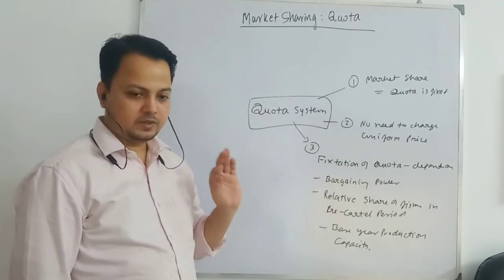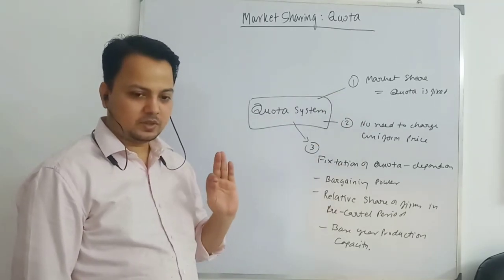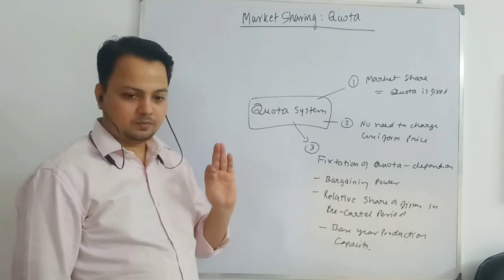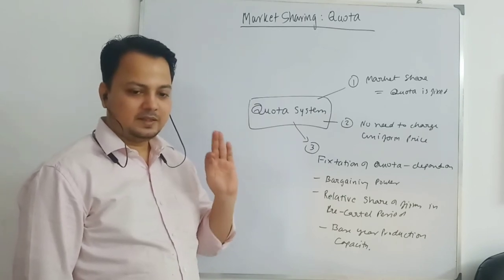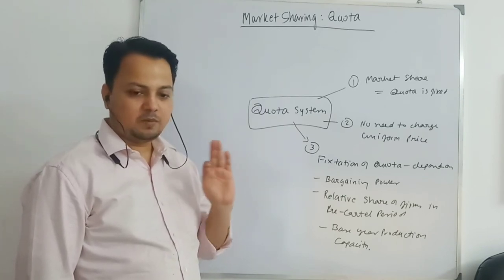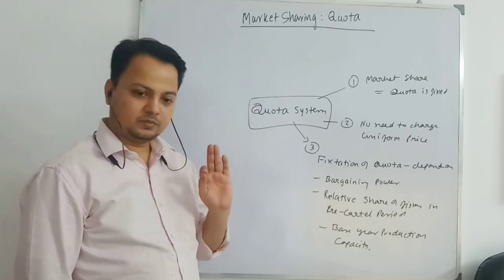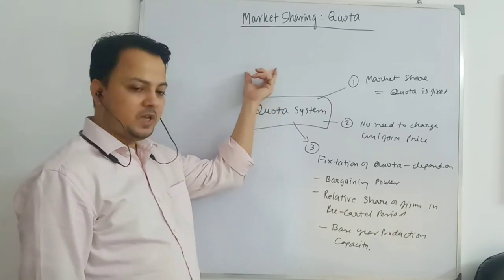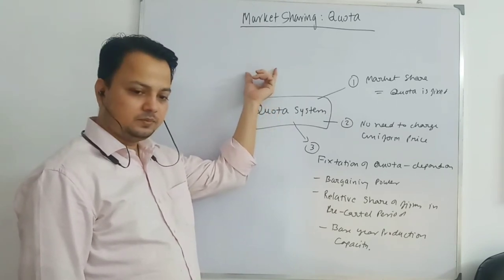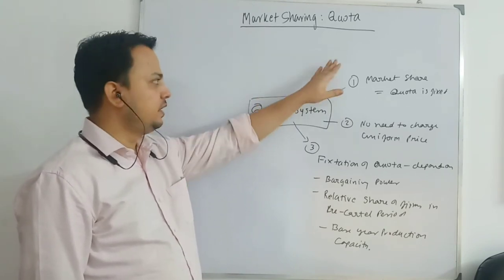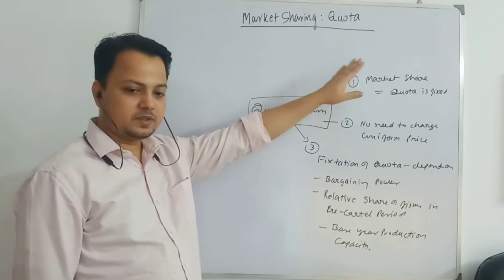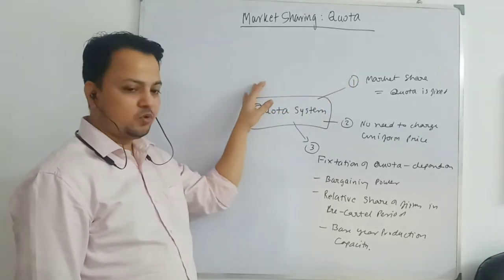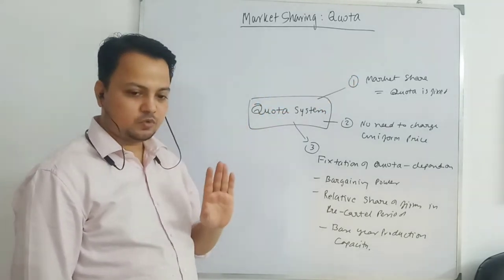We will be doing one simple model where we are taking two firms that have identical cost and demand functions. So we will have two firms with the same cost function, the same demand function, producing a homogeneous product.